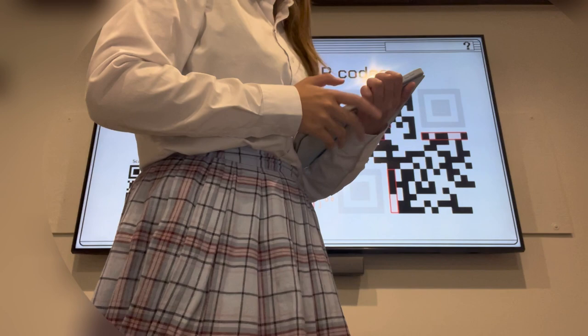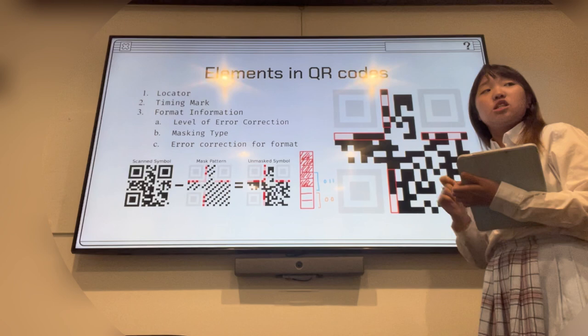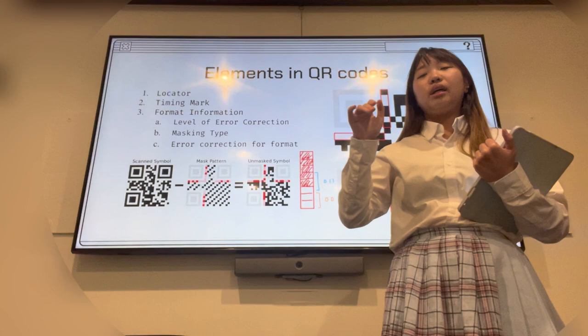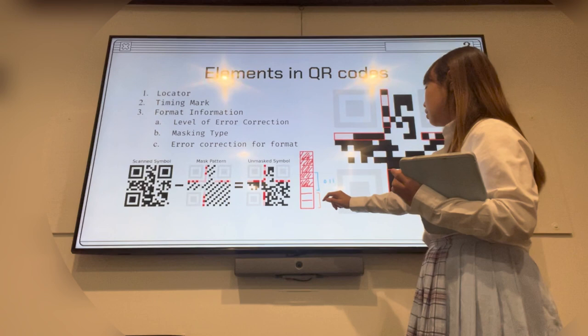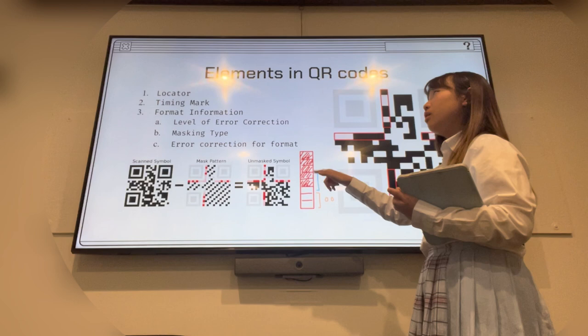Next is actual information part. In these four stripes, there will be format information about the QR code. QR code has four different levels of error correction: low, middle, quartile, and high. High can correct up to 30% of the error, and low can only correct 7% of the errors. How we read is that the first two bits of this format information is the level of error correction, and 00 means the middle. So in the middle error correction type, we can correct 15% of the errors in this QR code.